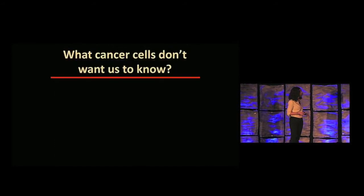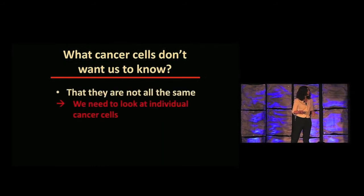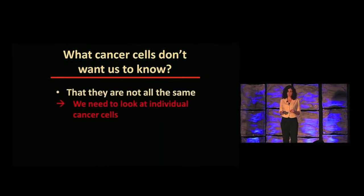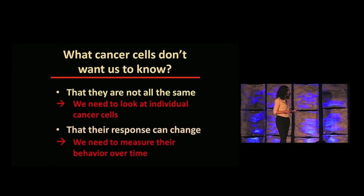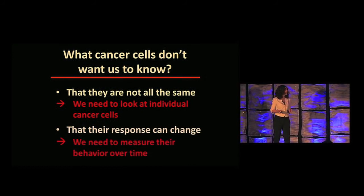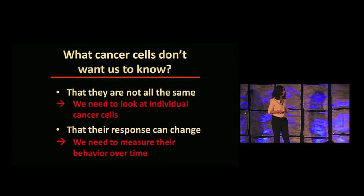Let me summarize: what cancer cells don't want us to know. They don't want us to know that they're not all the same — that there are large variations between cells, and it's very important to look at their behavior at the individual cell level. And they don't want us to know that their responses can change, that they're highly dynamic and can change over time. So we need to measure their behavior over time. Thank you.